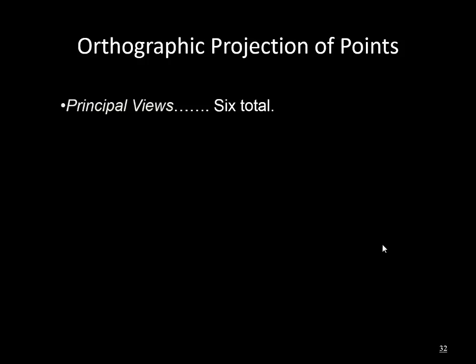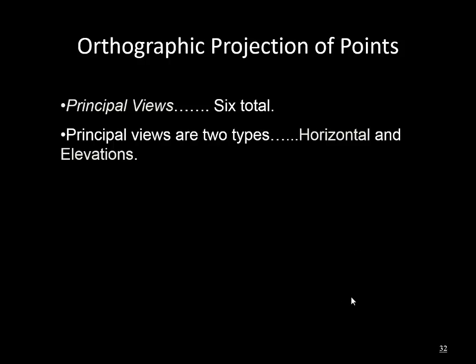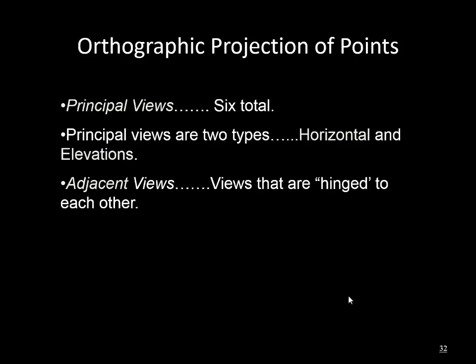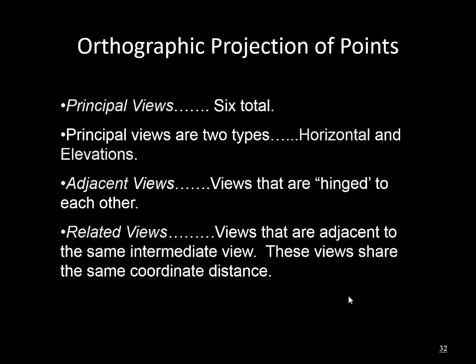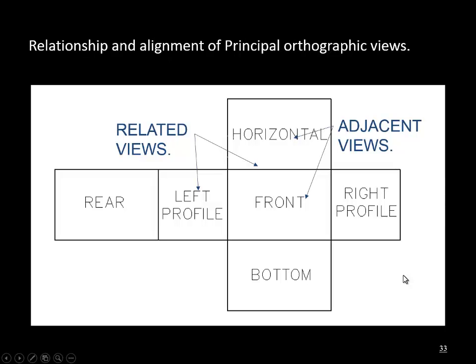To summarize: we've got six total principal views — the horizontals, which are the top and the bottom, and then our elevations, which are the front, back, left, and right side profiles. Adjacent views are views that are hinged to each other, and related views are views that are adjacent to the same intermediate view. These two are adjacent, these two are adjacent, these two share the same intermediate view so they're related, and we get the spaces the same in each one — however far back from the front will be the same.